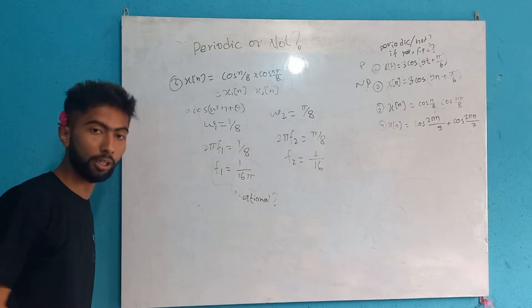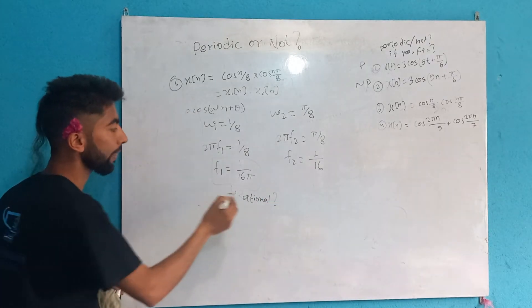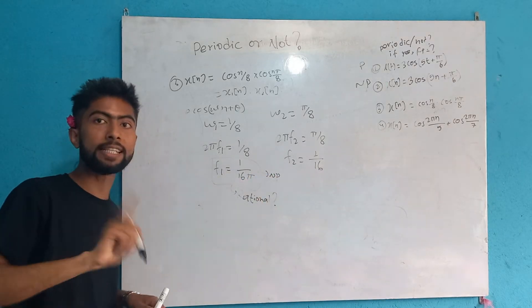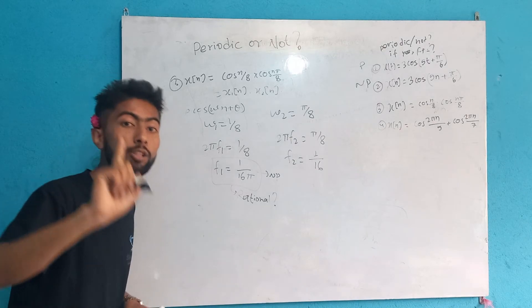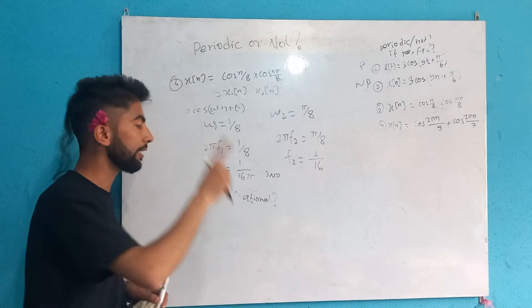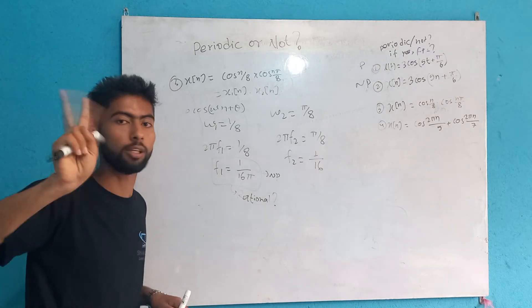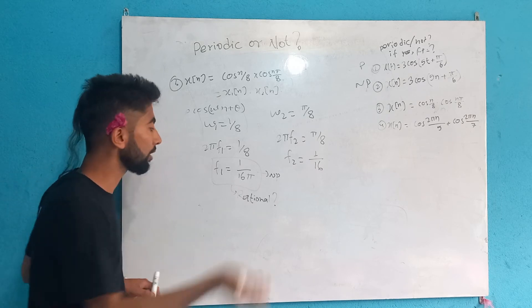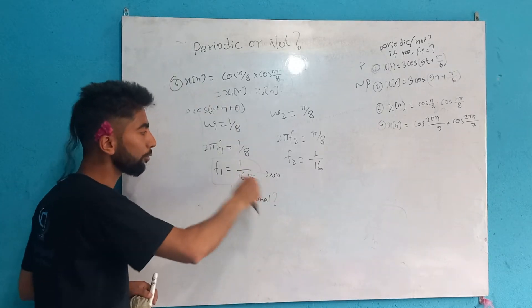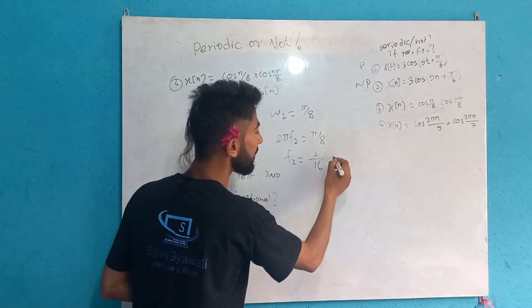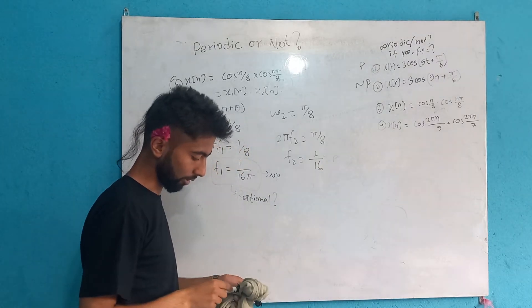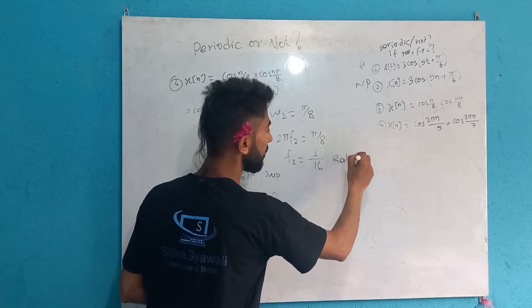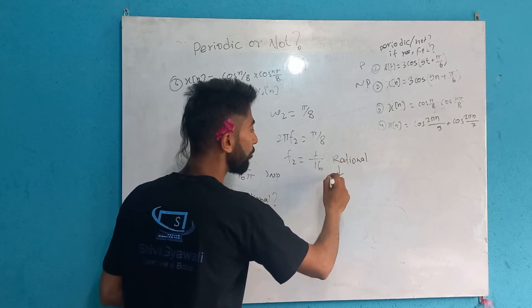If ω₀/(2π) is not rational, the signal is non-periodic. 1/(16π) is not a rational number — rational means ratio of two integers. If the ratio is an integer over an integer, it is rational and the signal is periodic.